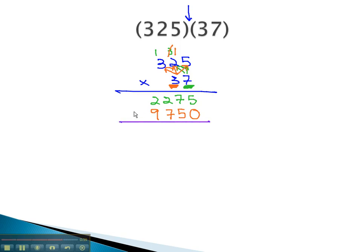We're now ready to add these together to get our final product. 5 and 0 is 5, 7 and 5 is 12, 7, 2, and 1 is 10. So we'll carry the 1, and 2, 9, and 1 is 12, and we get our final answer, 12,025.